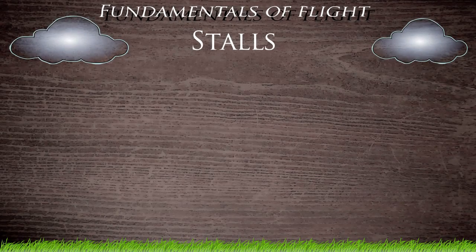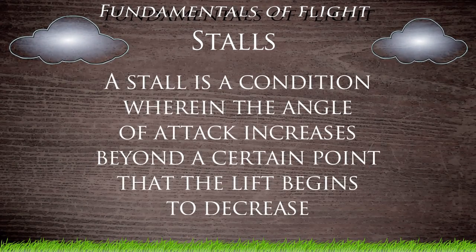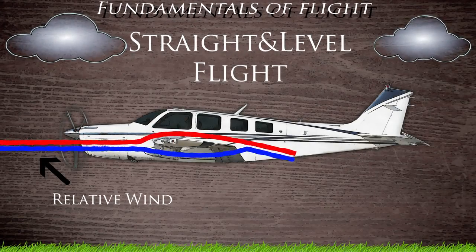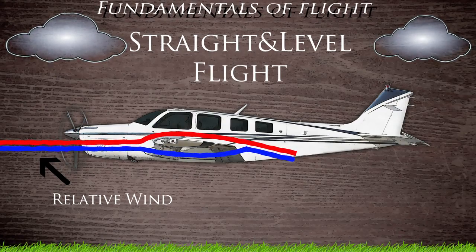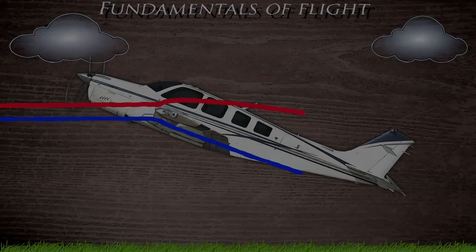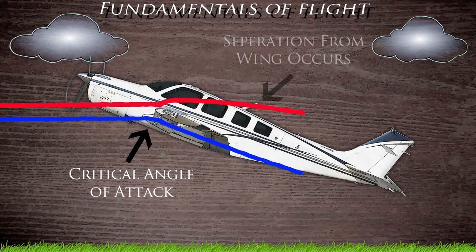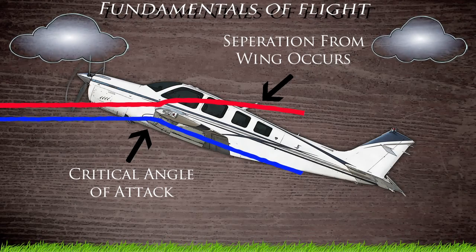Now let's talk a little bit about how the aircraft stalls. A stall is nothing more than another term for the airfoil no longer being able to produce lift. As we mentioned before, in normal flight the relative wind flows smoothly both above and below the airfoil. However, when the airfoil's angle of attack reaches a certain point — also known as the critical angle of attack — the relative wind is no longer able to conform to the surface of the airfoil. Once this happens, the aircraft is said to have stalled.